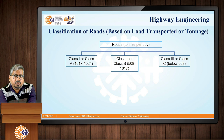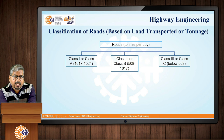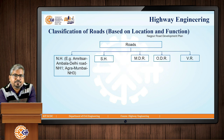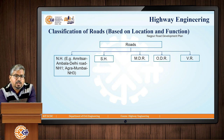Next is classification based on load transported or tonnage — how much load in tons the road can withstand, defined as tons per day. There are various classes: Class 1 or Class A, Class 2 or Class B, and Class 3 or Class C. Then we have classification based on location and function, with roads classified into five types: national highway, state highway, major district road, other district road, and village roads.